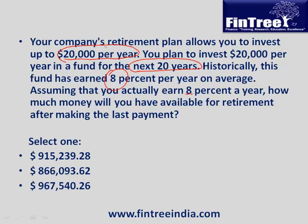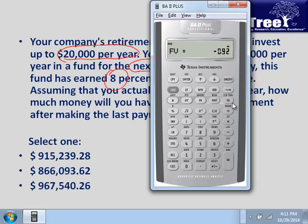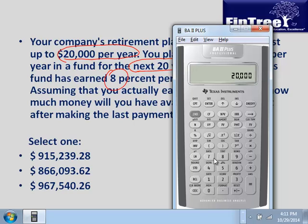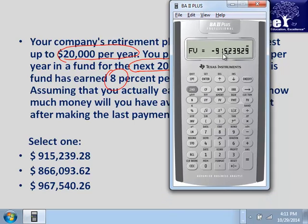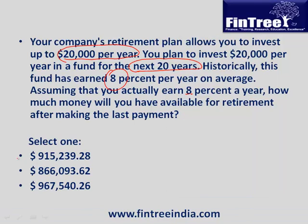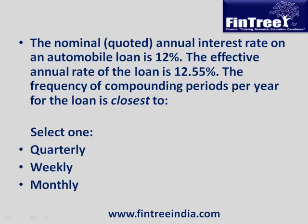$20,000 is what we are going to invest every year, so this is an annuity. Second, clear TVM. $20,000 is the payment, 20 is N, 8 is IY, compute future value — the answer is $915,000. That is the correct answer.